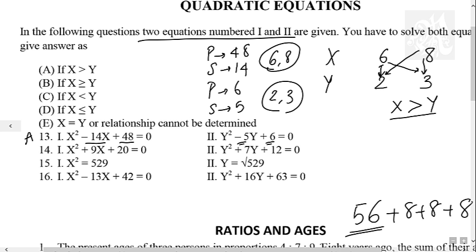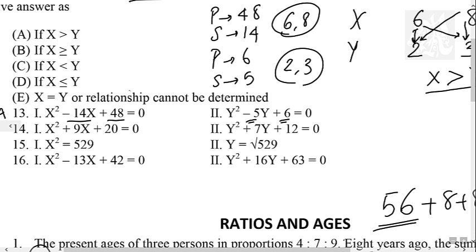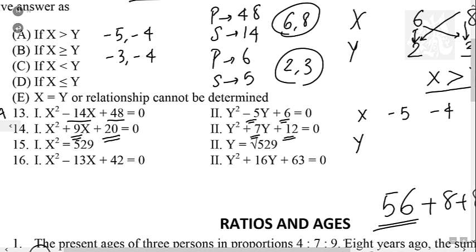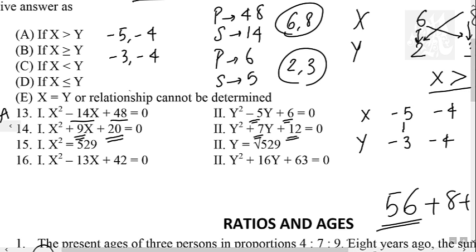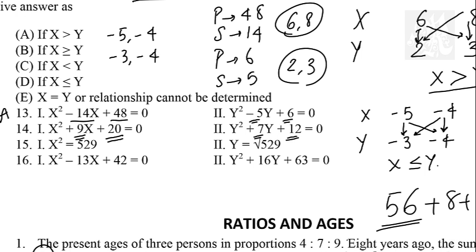Next question: x squared plus 9x plus 20 — product 20, sum minus 9, so roots are minus 5 and minus 4. For y: product 12, sum 7, numbers minus 3 and minus 4. Write x as minus 5, minus 4 and y as minus 3, minus 4. Start comparing: minus 5 is less than minus 3, less than. Minus 4 is less than minus 3, but equal to minus 4. So x is less than or equal to y. The answer is option D.